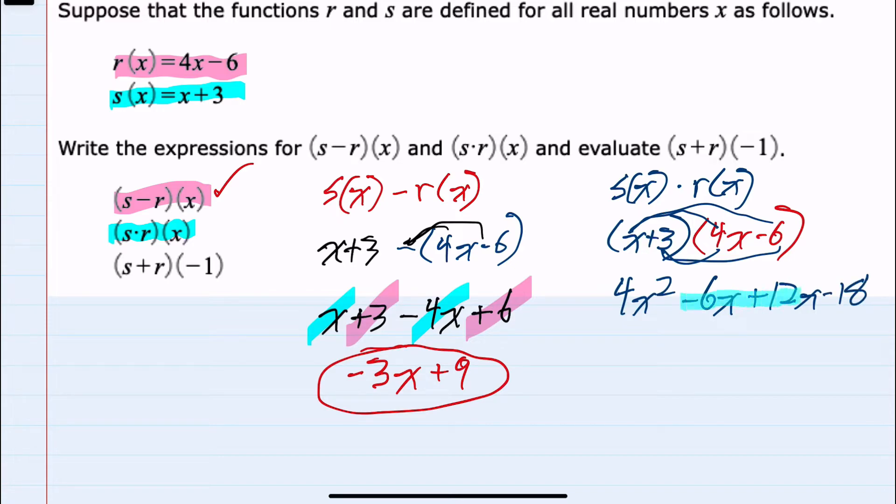Once more combining like terms here in the middle, this would simplify to 4x squared. Minus 6x plus 12x would be a positive 6x, and minus 18, so we found s times r of x.